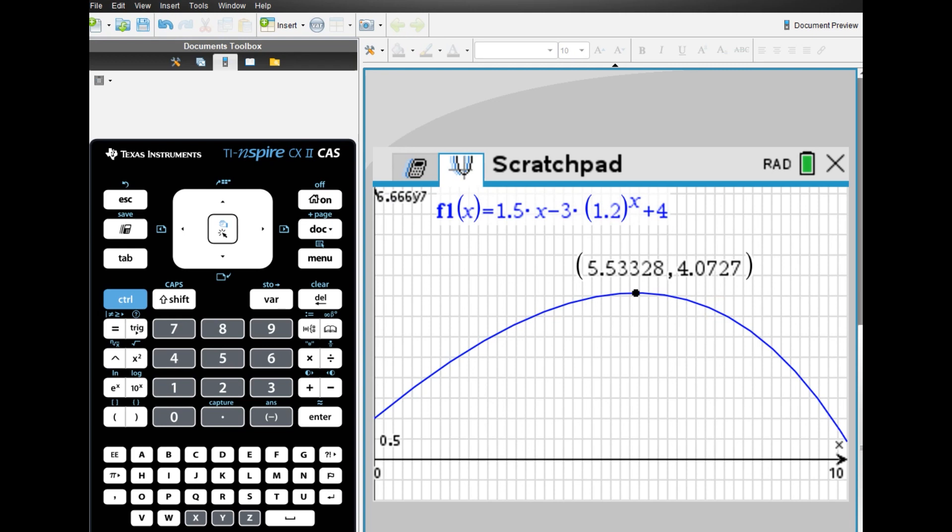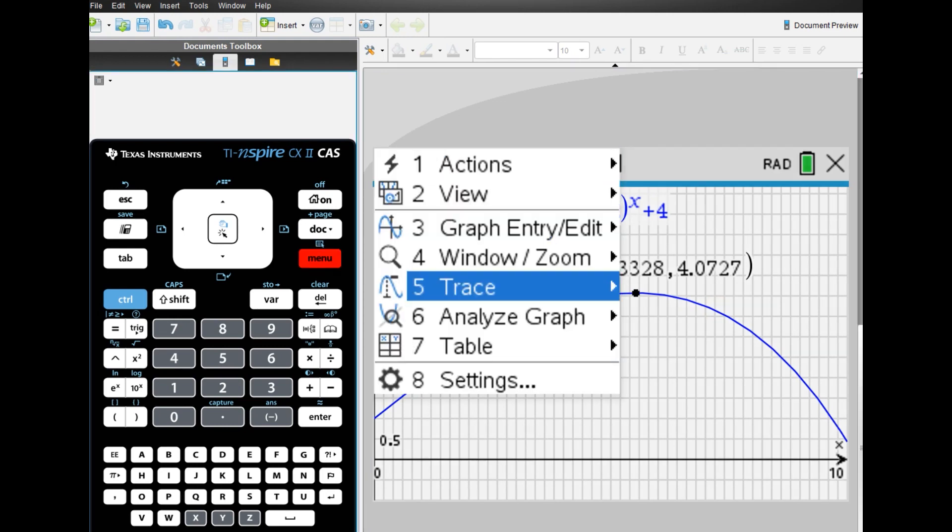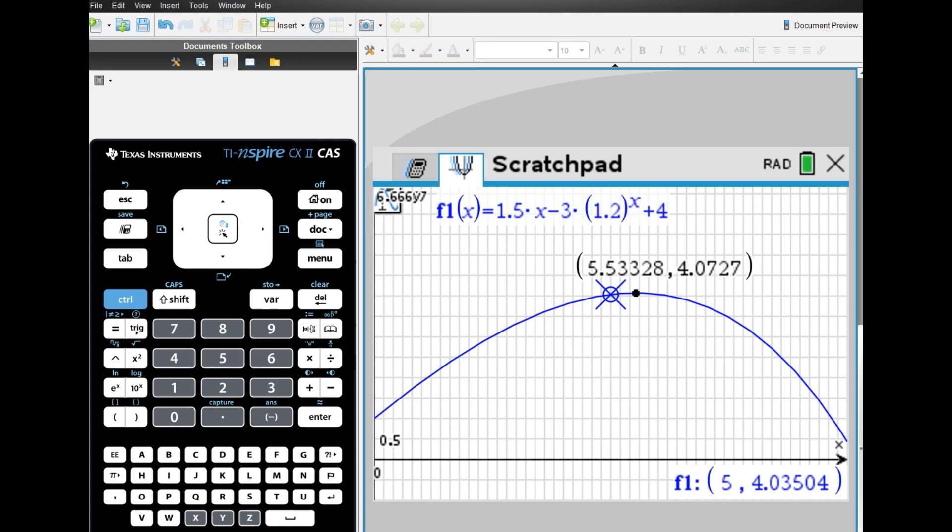However, this is not the correct answer because the index n of a sequence can only take integer values. Therefore, we must check the cases where x equals 5 and 6 respectively, and choose the larger value as the answer. For this problem, a of 5 is 4.035 and a of 6 is 4.042, so the maximum value is at when n is 6. Remember, in sequence problems, the index n must always be an integer.